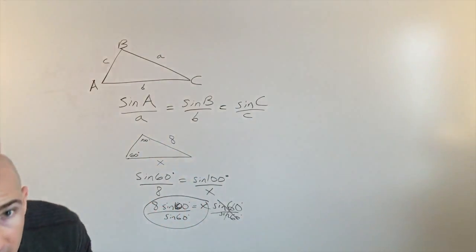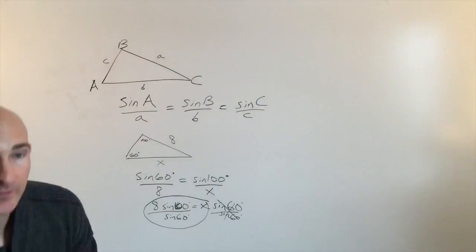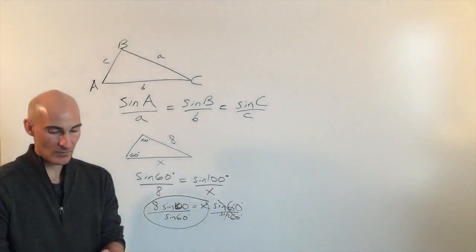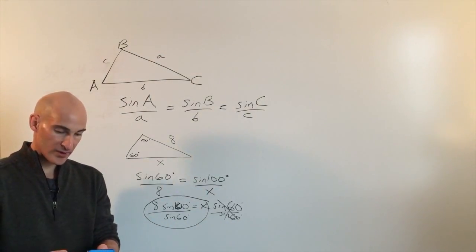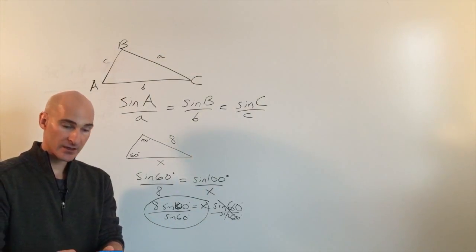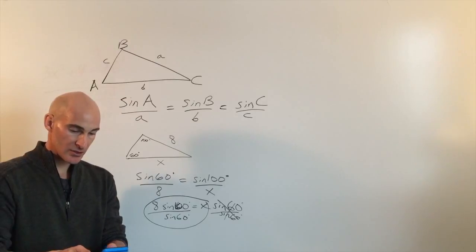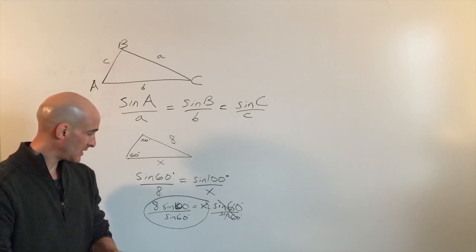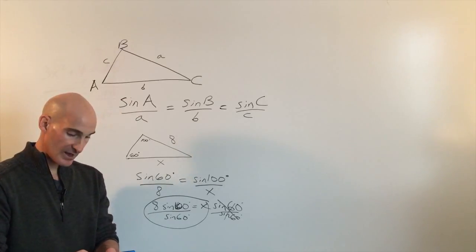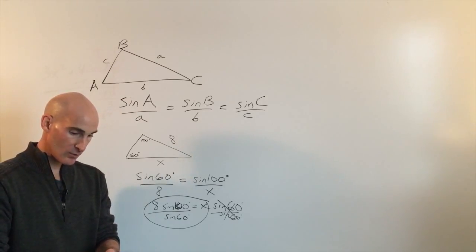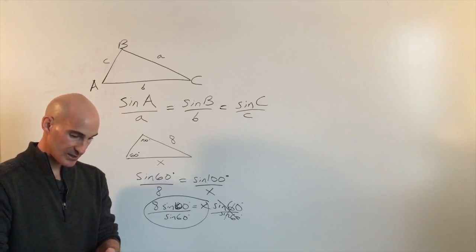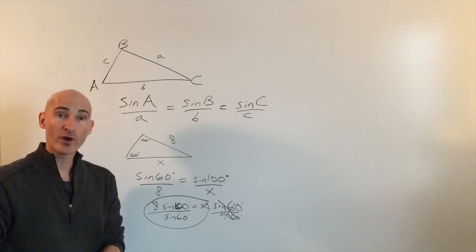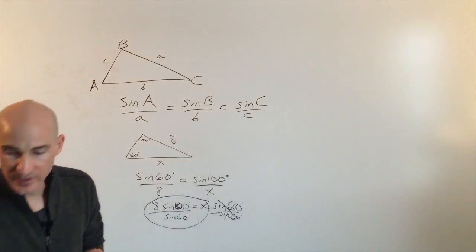Let's check on the calculator. Make sure the mode is in degrees — yes, good. We've got 8 sine 100 divided by sine 60, and we get approximately 9.1.